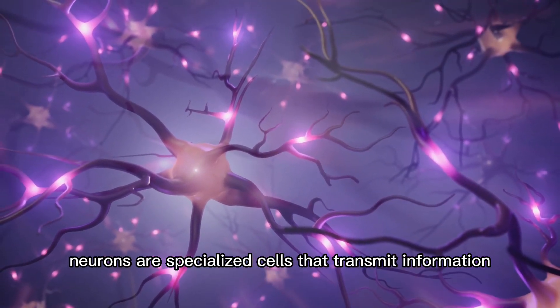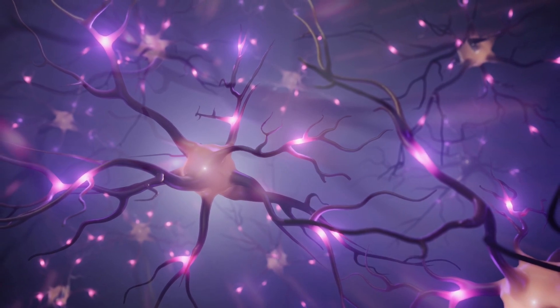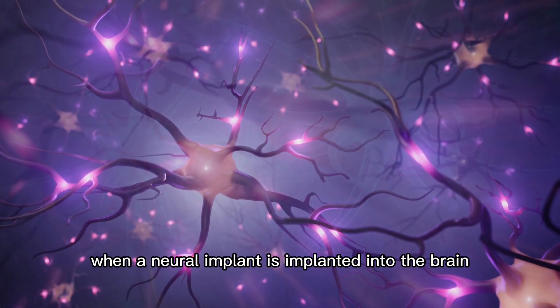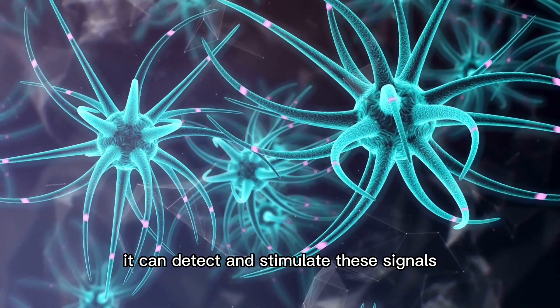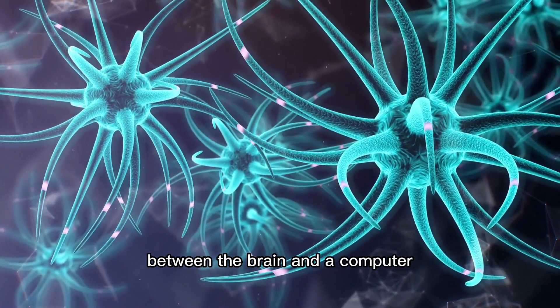Neurons are specialized cells that transmit information through electrical and chemical signals. When a neural implant is implanted into the brain, it can detect and stimulate these signals, allowing for the transfer of information between the brain and a computer.